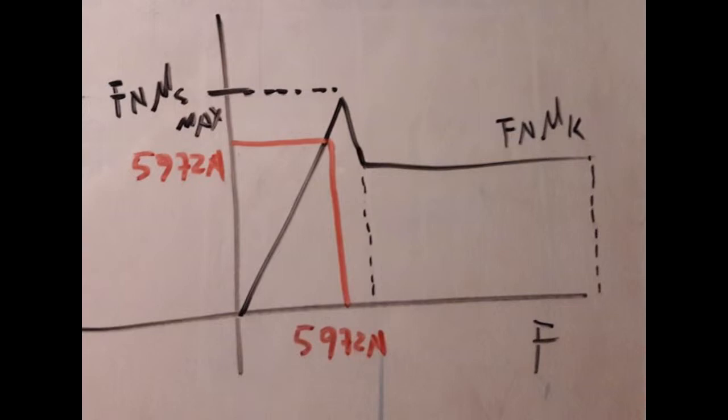This is the graph for the applied force versus the friction force. Because the truck is static, this means that the friction force is below Fs max, so it corresponds to the red line.